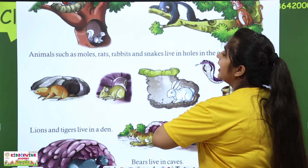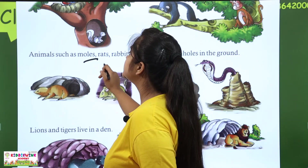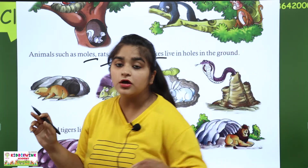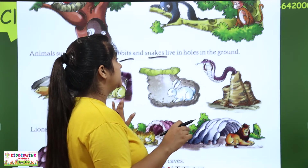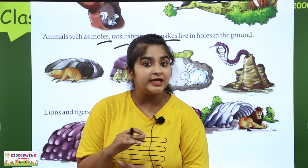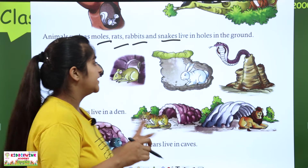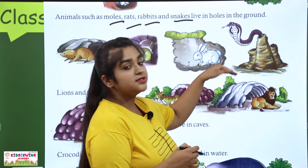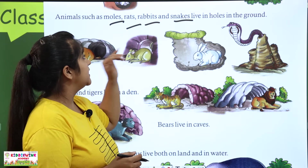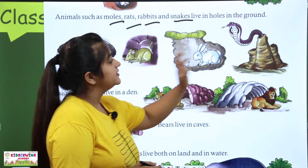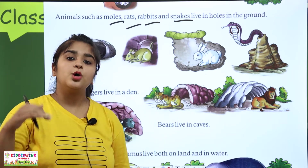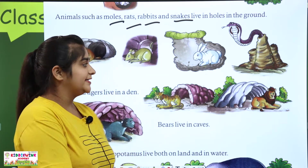Next, animals such as wolves, rats, rabbits and snakes live in holes in the ground. They dig and make holes in the ground. Rabbits, rats and snakes make holes and that is their house.